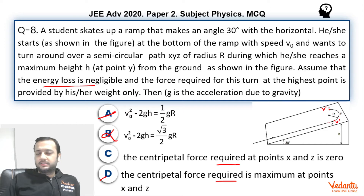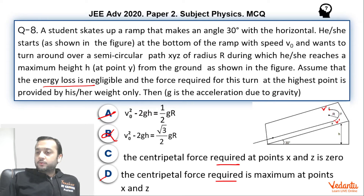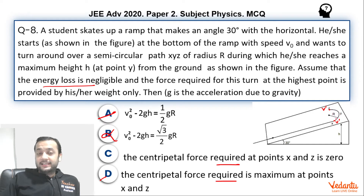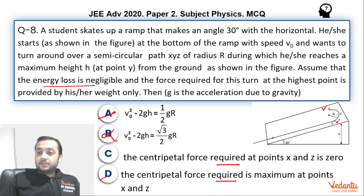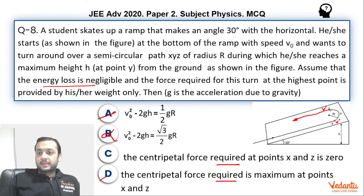But let us see what might be a flaw in this thinking. The key word here is 'required.' At point X, circular motion is about to happen — if centripetal force is not provided, the particle won't turn; its velocity vector needs to change. So centripetal force is indeed required at X. But what happens at point Z? Here the circular motion has already happened, and the velocity vector does not need to change.